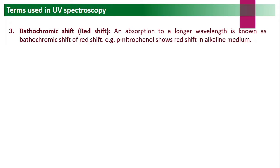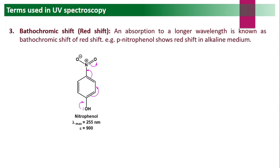The next term is bathochromic shift, also called red shift. Absorption towards a longer wavelength is known as bathochromic shift or red shift. For example, when benzene is converted into phenol, absorption shifts from 255 nm to 270 nm. A higher lambda max is called bathochromic shift. Consider para-nitrophenol, which has a lambda max of 255 nm and epsilon (molar absorptivity) of 900.